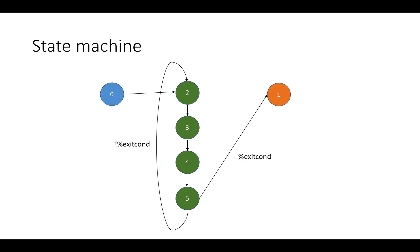In the last video we talked about how you can accelerate the custom processor generated by a high-level synthesis tool by finding independent instructions in the same basic block and scheduling them in the same cycle. We ended up, for a simple program that iterates over a loop adding seven to every entry, getting a finite state machine that looks like this — an entry state, green states for the loop body, then a jump back or to the end state. This is much better than before, but there's another critical optimization: pipelining.